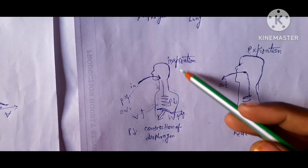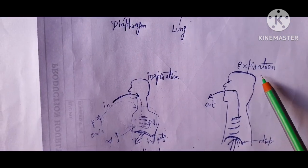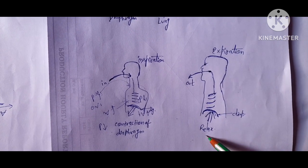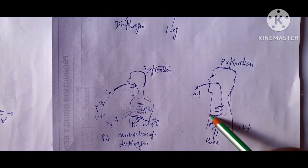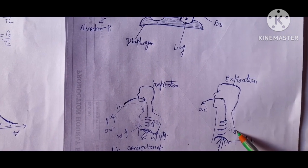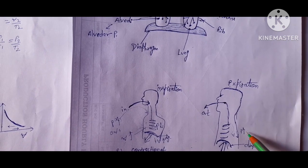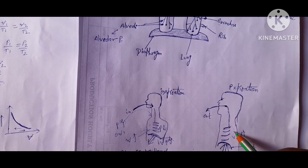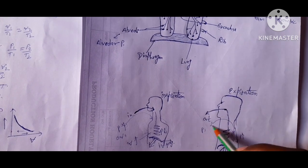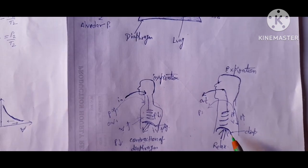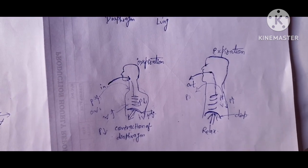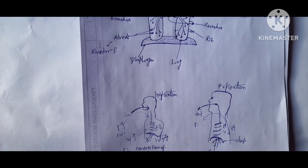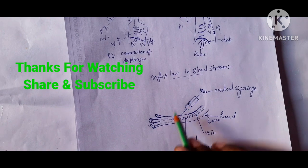When we exhale, the diaphragm and rib muscles relax, the chest cavity contracts, and lung volume decreases. By Boyle's Law, decreasing lung volume causes pressure inside the lungs to increase. Air then flows out of the lungs from the higher inside pressure to the lower outside pressure. This cycle of inspiration and expiration continues our whole life, following Boyle's Law. In the next video, we will discuss Boyle's Law in the bloodstream.